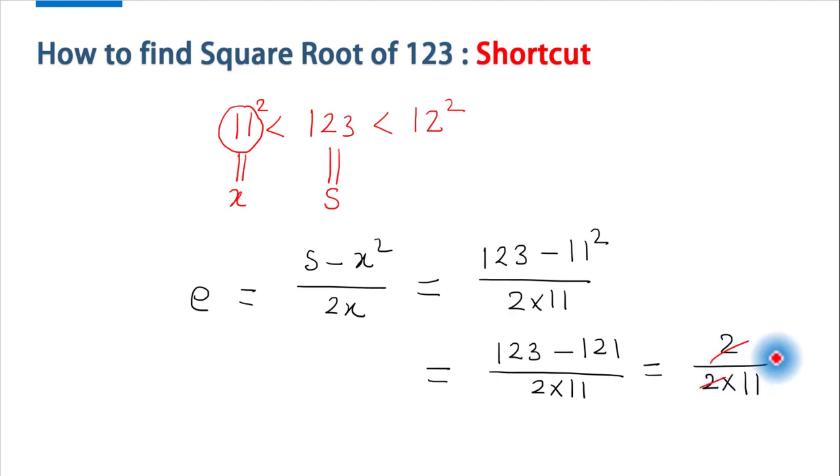And it turns out to be 1 over 11. If we calculate this fraction we will get 0.0909 and so on.